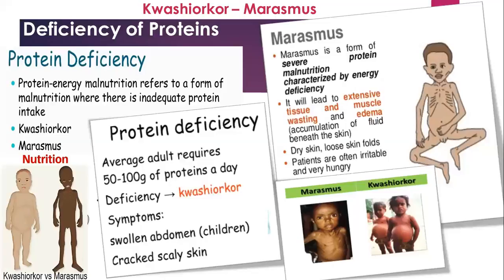Now we will look at deficiency of protein. Protein deficiency is a form of malnutrition caused by inadequate protein intake. If your protein intake is less, two deficiencies can occur: kwashiorkor and marasmus. Kwashiorkor is a serious protein deficiency disease prevalent among babies and young children aged 1 to 3 years, mostly in Africa, Asia, and South America. It is due to deficiency of protein from a very young age and if not treated early, the child may not survive.